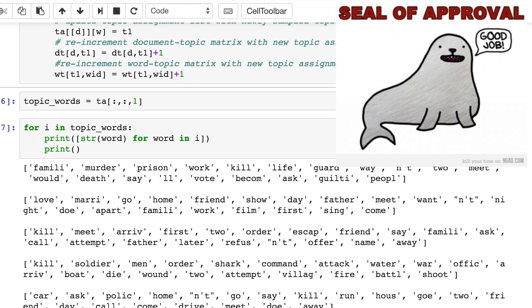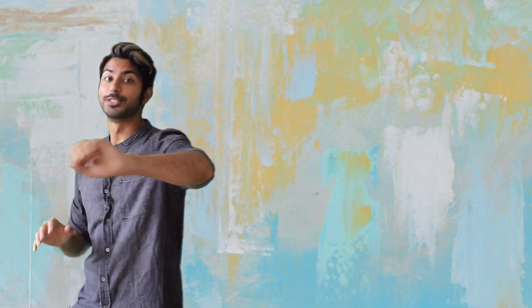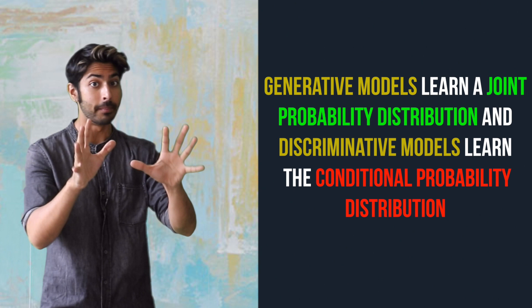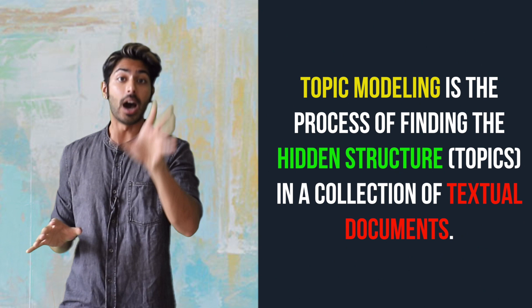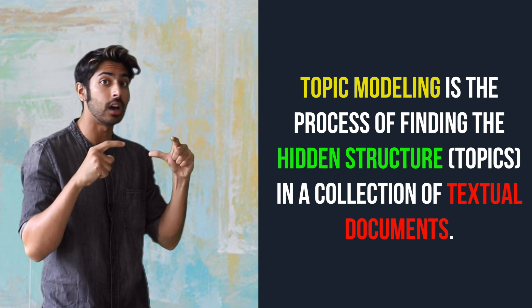To summarize: generative models learn a joint probability distribution between input data and labels, while discriminative models learn the conditional probability distribution between them. Topic modeling is all about finding the hidden thematic structure in a collection of documents, and Latent Dirichlet Allocation is a generative topic modeling technique that can be implemented pretty easily.